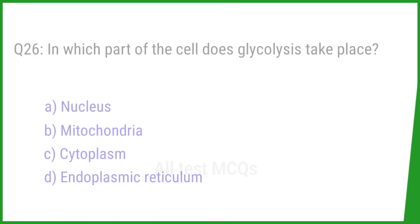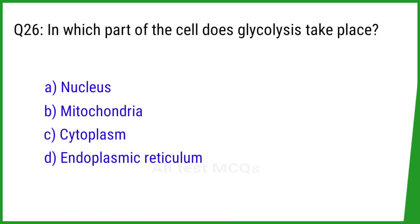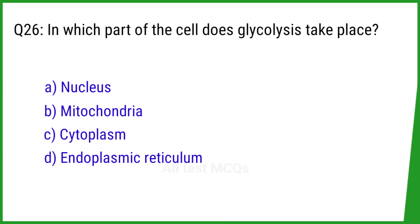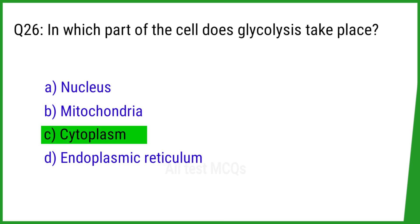Question number 26. In which part of the cell does glycolysis take place? The right answer is option C: Cytoplasm.